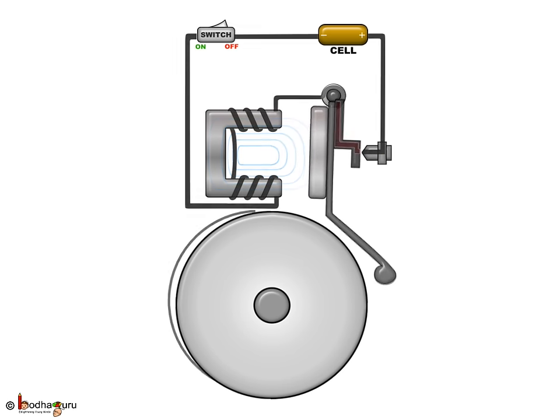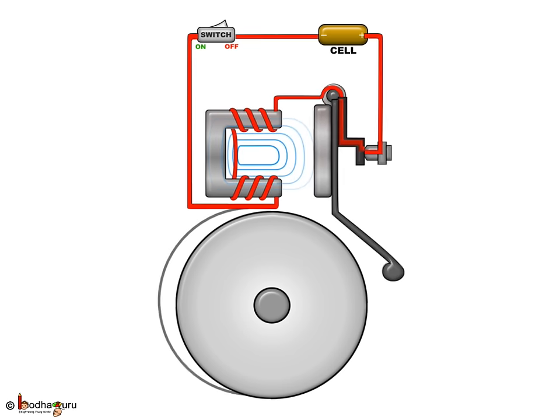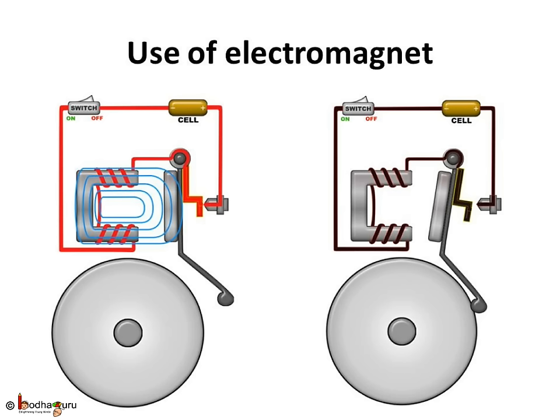Interesting application of an electromagnet, isn't it? So, in a nutshell, by turning an electromagnet on and off, we made a useful thing, an electric bell.